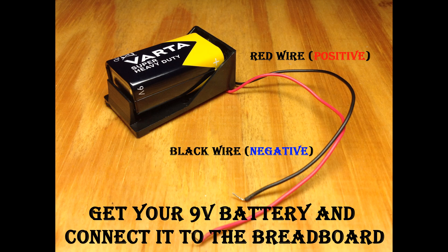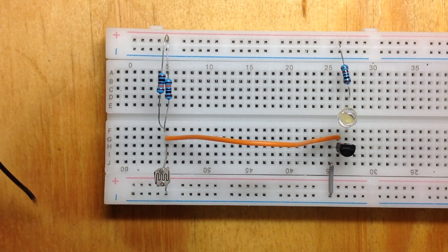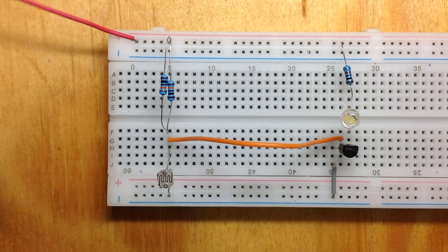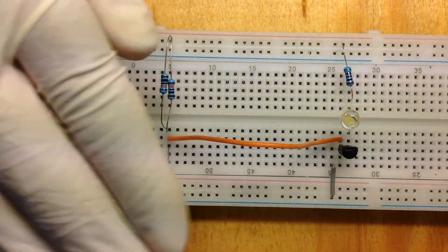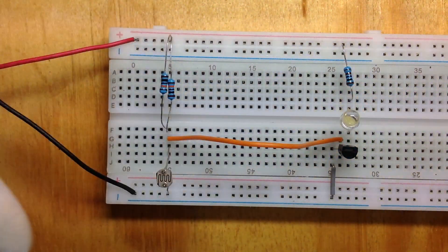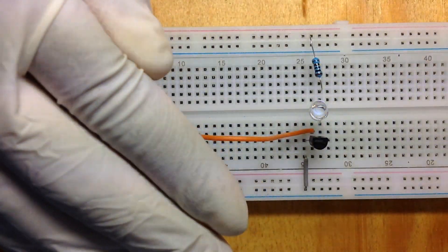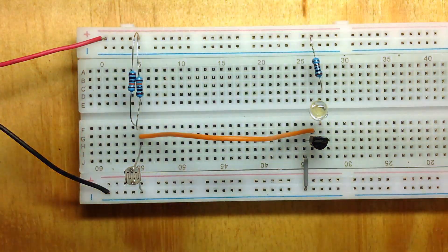Get your 9-volt battery and connect it to the breadboard. The red wire is positive, which should be connected to the positive terminal of the breadboard, and the black wire is negative, which should be connected to the negative terminal of the breadboard.